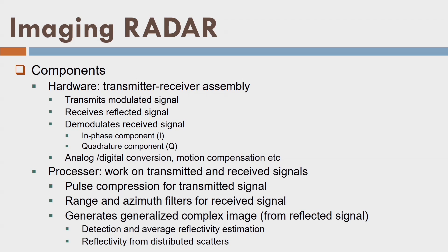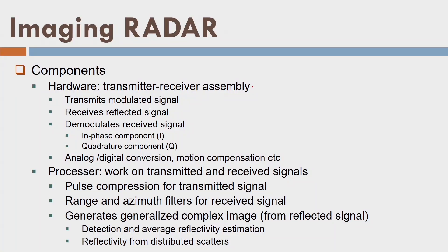What are the components of an imaging radar? The radar transmits a signal, the signal interacts with the surface, reflects back, and the radar's receiver records it as an image. Imaging radar has two components: hardware and processor. Hardware consists of a transmitter-receiver assembly. It transmits a modulated signal, receives the reflected signal, and demodulates it into two components — a phase component and a quadrature component. It also performs analog-to-digital conversion and motion compensation, similar to image motion compensation in photogrammetry.